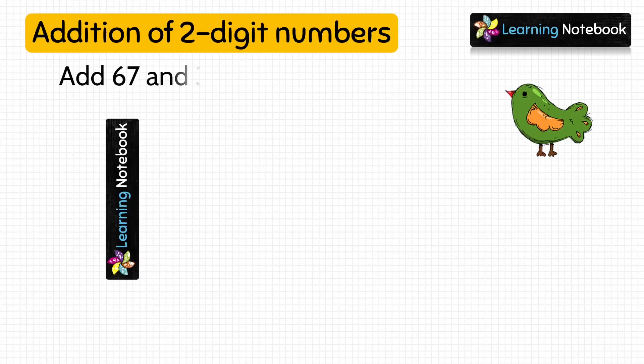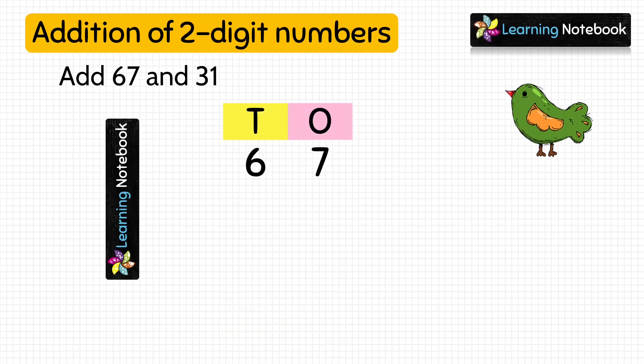Let's do one more question. Add 67 and 31. So let's first write these numbers in column form, and then we will add the digits at ones place.